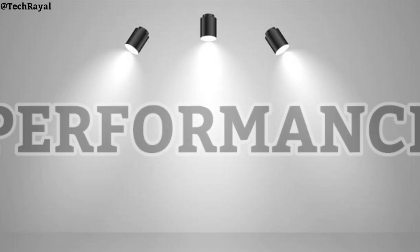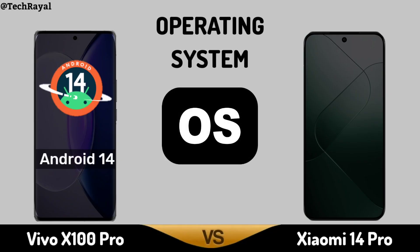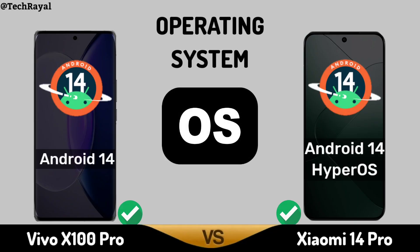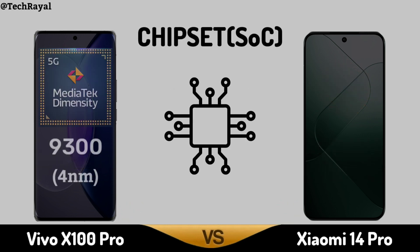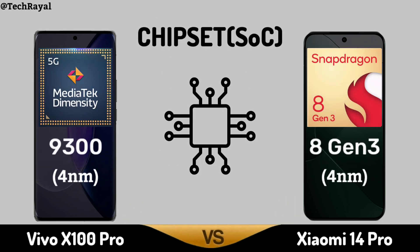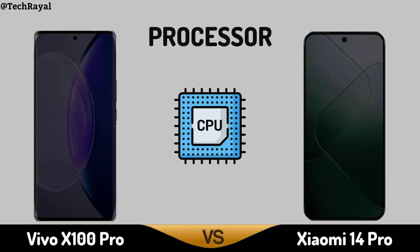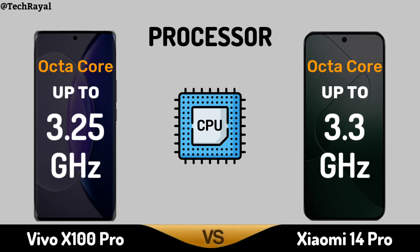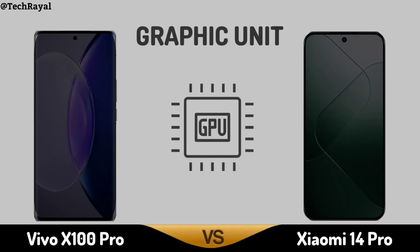Now, core performance: operating system, chipset, processor, and graphic unit.